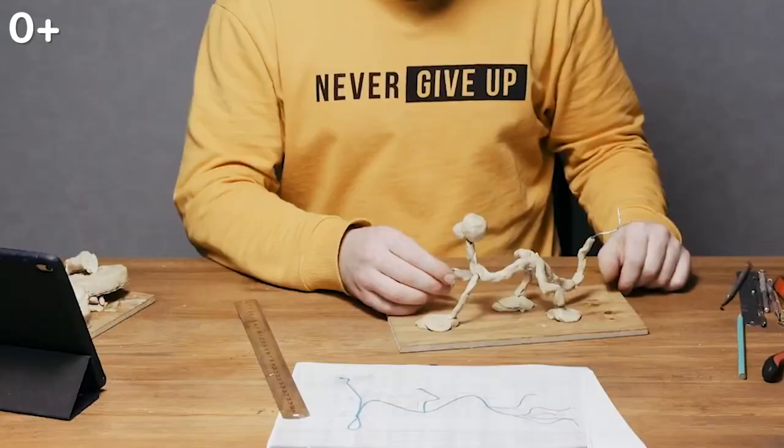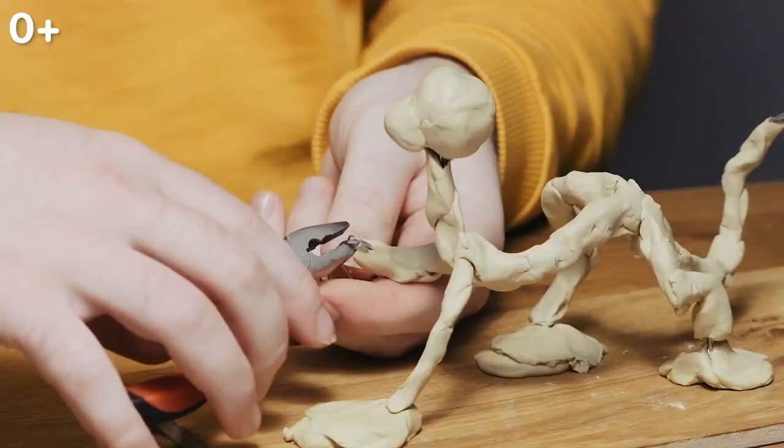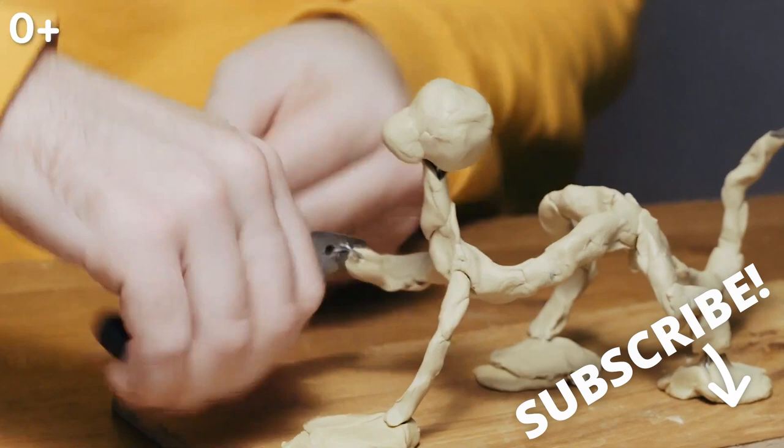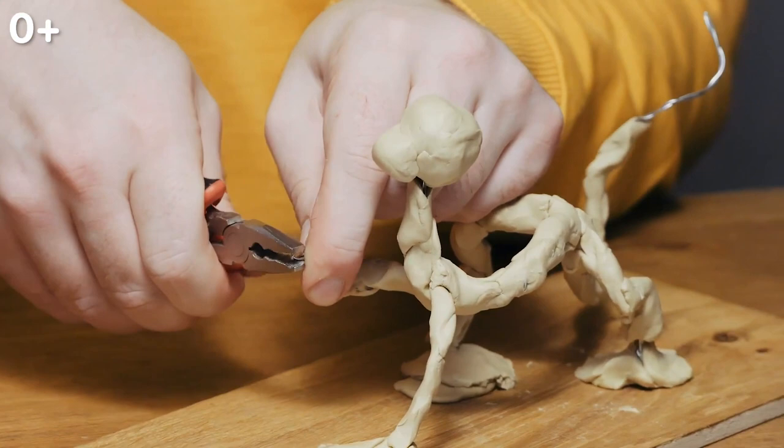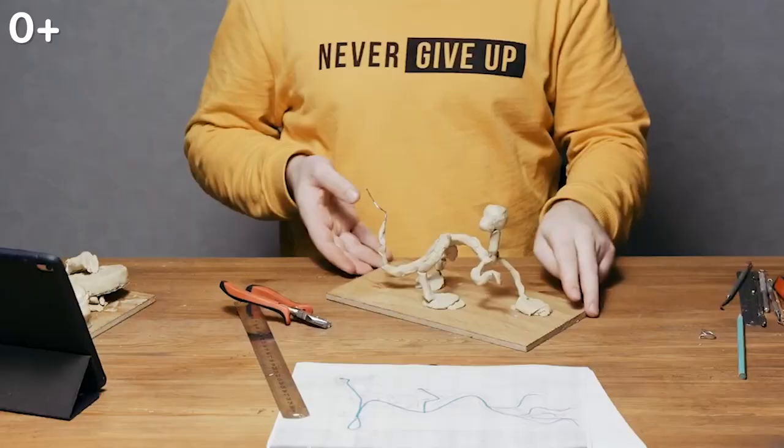I decided to leave one paw raised, so I'll cut off the loop and bend the edge down. Here's how it turned out after the first stage.